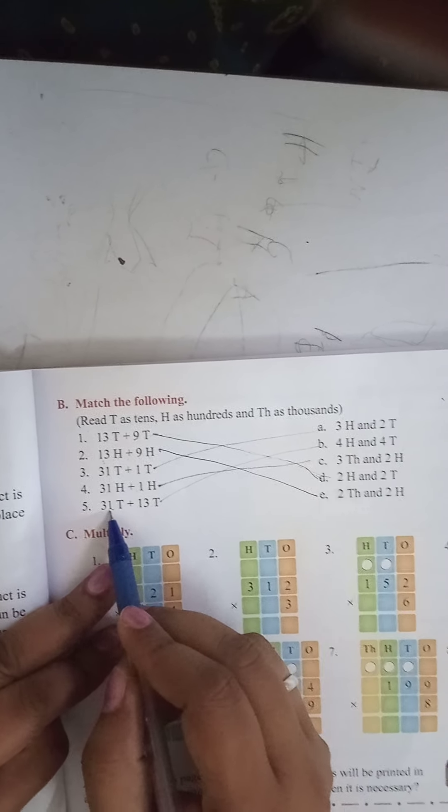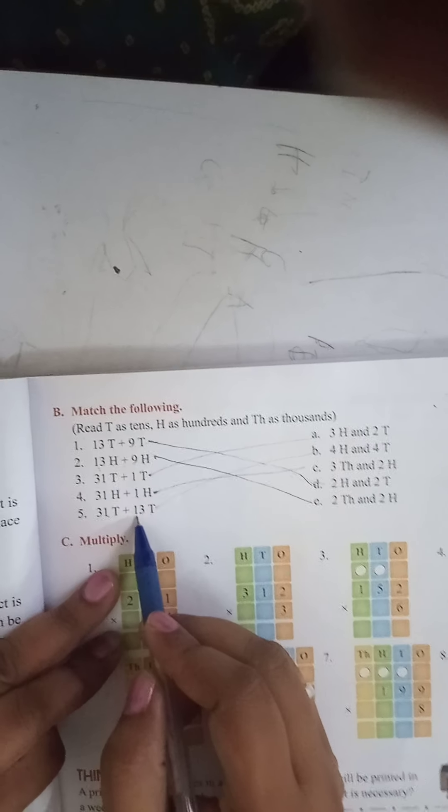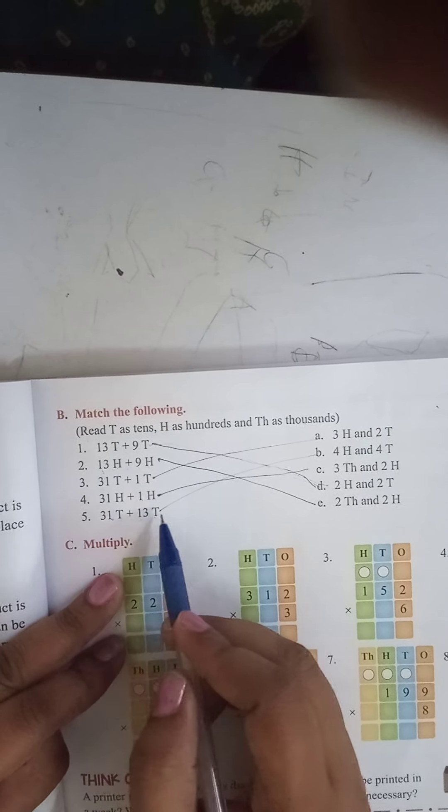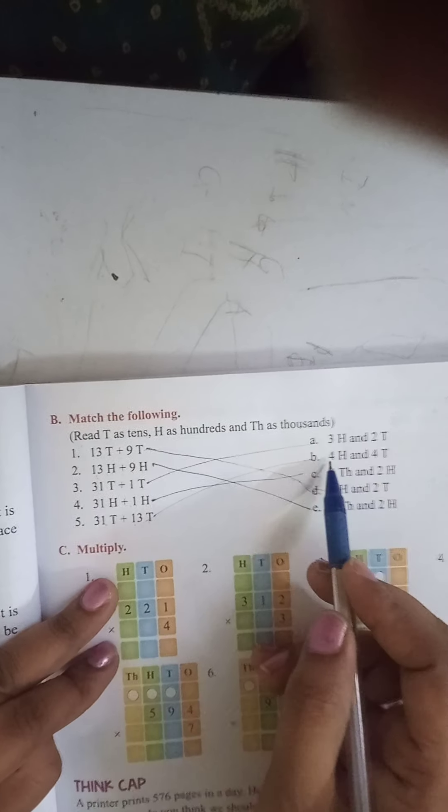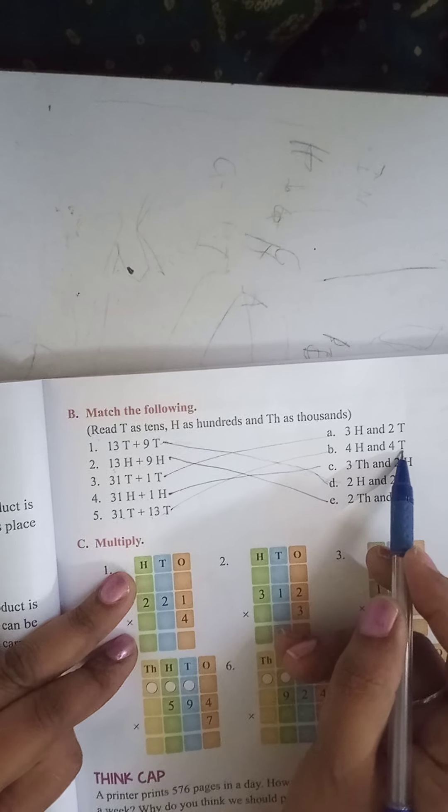Fifth one is 31 hundred plus 13 tens. 31 plus 13. The answer will be 4000 and 4 tens. Okay. Thank you.